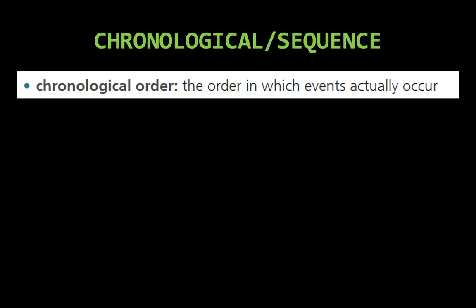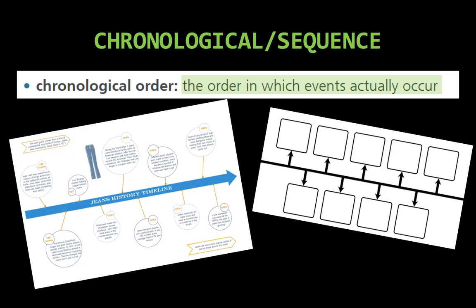With chronological or sequential order, it is the order in which events actually occur. With chronological order, you might use a graphic organizer to organize your ideas if you are going to write a chronological type paper or a biography. Here are some examples of graphic organizers you might use.